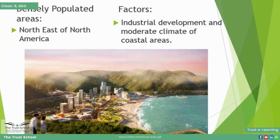At number three is the Northeast of North America. In this area, the northeastern portion of the United States of America and the southeastern portion of Canada is very densely populated. The main factors here are industrial development and the moderate climate of coastal areas.